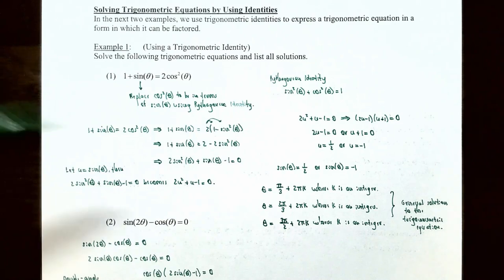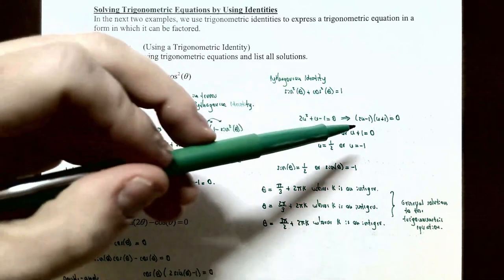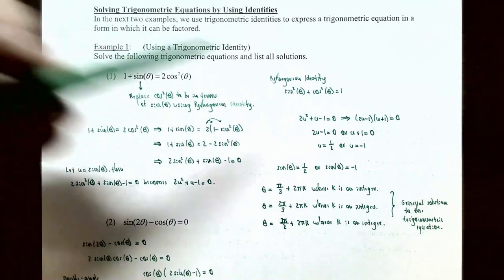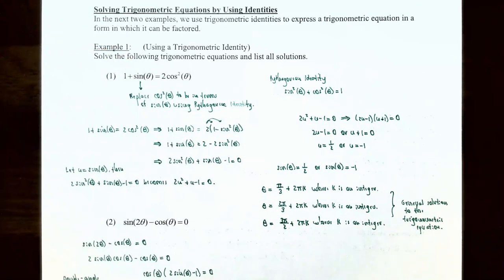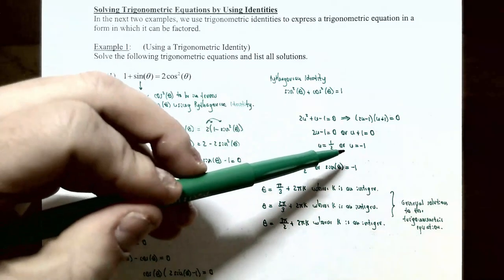We solve the quadratic 2u squared plus u minus 1 equals zero using the AC method or trial and error. It factors as (2u minus 1)(u + 1) equals zero, so 2u minus 1 equals zero or u plus 1 equals zero. That gives u equals one-half or u equals negative one. Since u equals sine of theta: sine of theta equals one-half or sine of theta equals negative one.